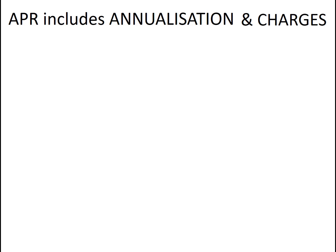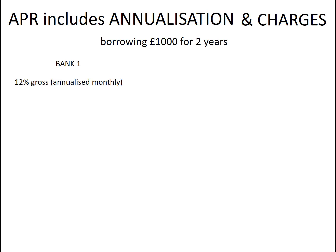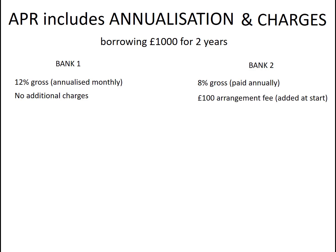APR includes annualization and charges. The best way to explain this is through an example. Say I want to borrow £1,000 over two years, and Bank 1 offers me 12% gross, annualized monthly, with no additional charges. Bank 2, on the other hand, offers me 8% gross paid annually with no annualization, but this offer includes a £100 arrangement fee which is added to the loan at the start of the transaction. How do those two deals compare, and what are the respective APRs?